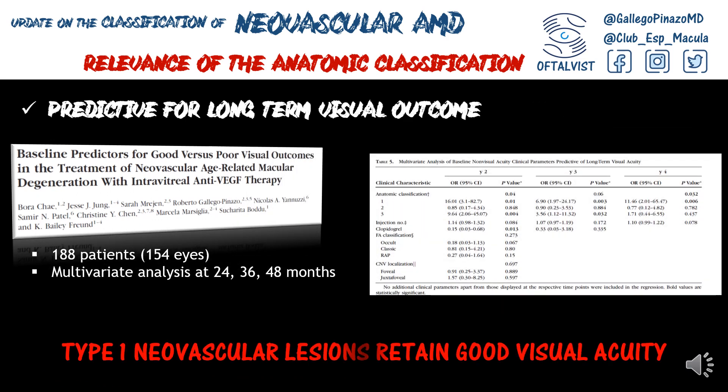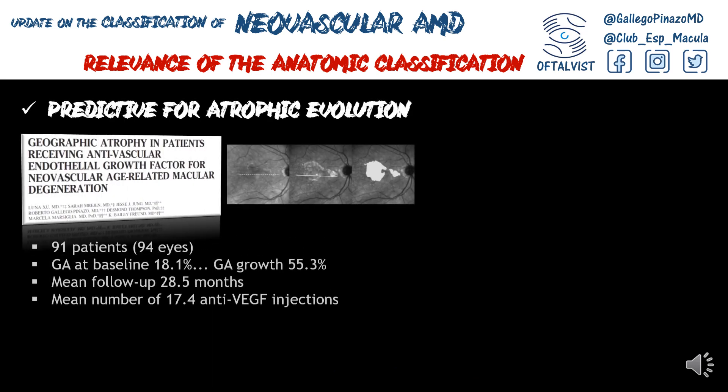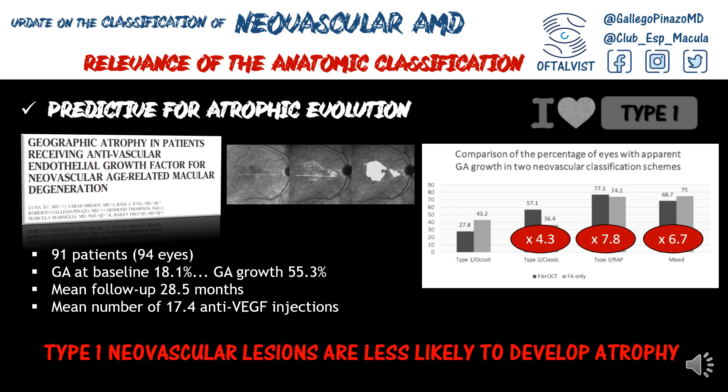Even at baseline, type 1 neovascular lesions are the ones to retain good visual acuity in the long term, independently of any other parameter analyzed. And about the atrophic evolution, we found that type 1 neovascular lesions are much less likely to develop atrophy, with type 2 lesions showing a 4.3-fold increase in that risk, and type 3 RAP lesions showing almost an 8-fold risk to develop atrophy. So it's important to know what we have in our hands at baseline.